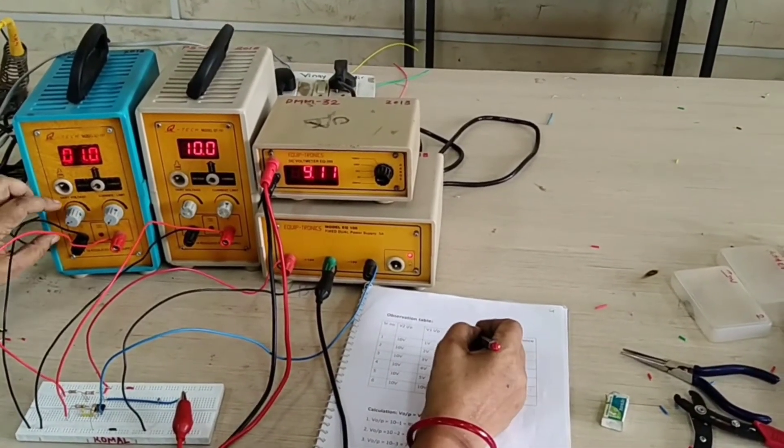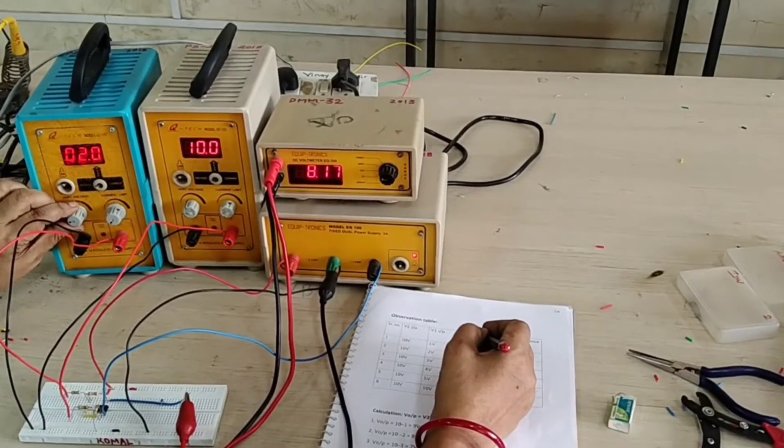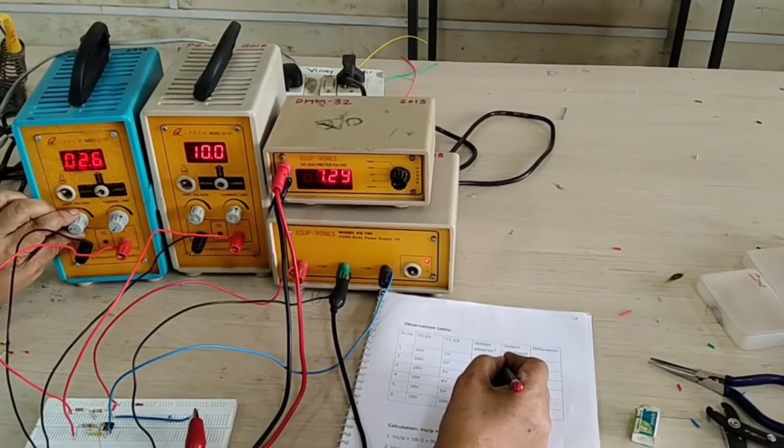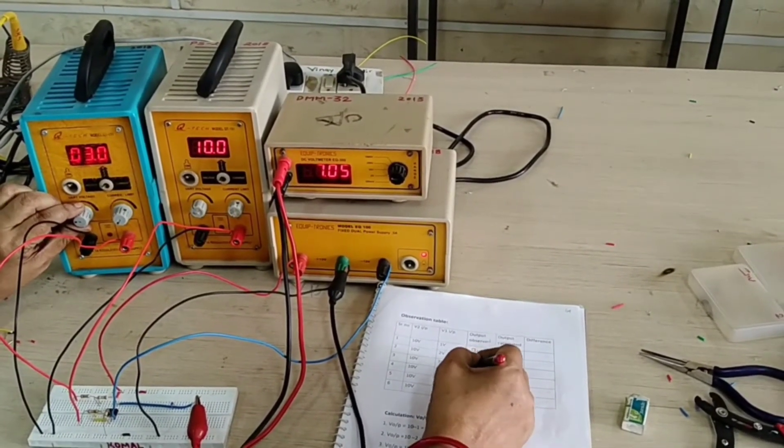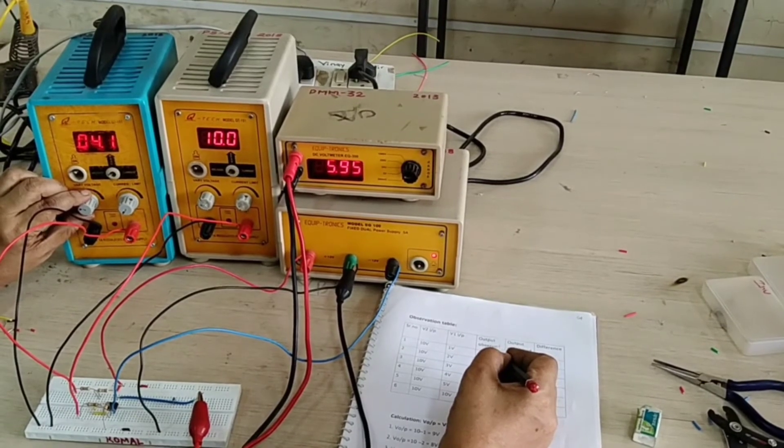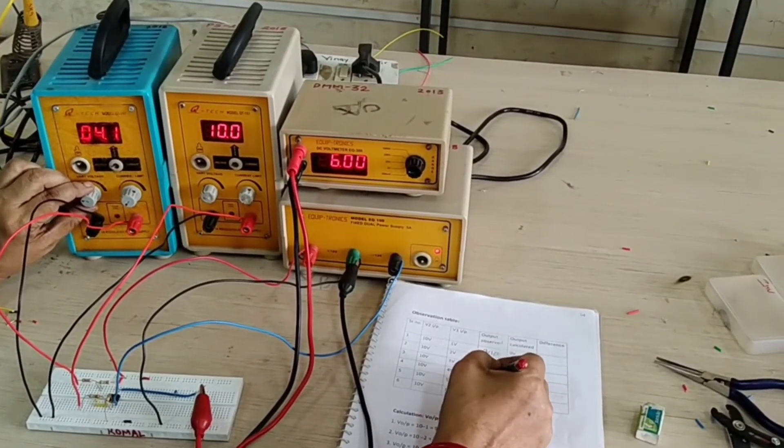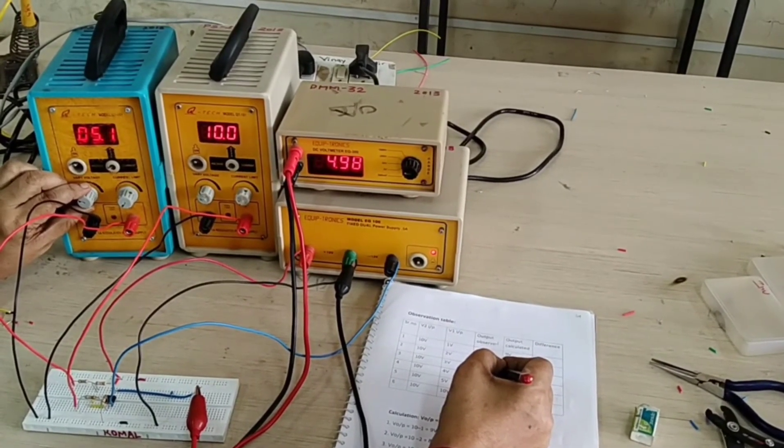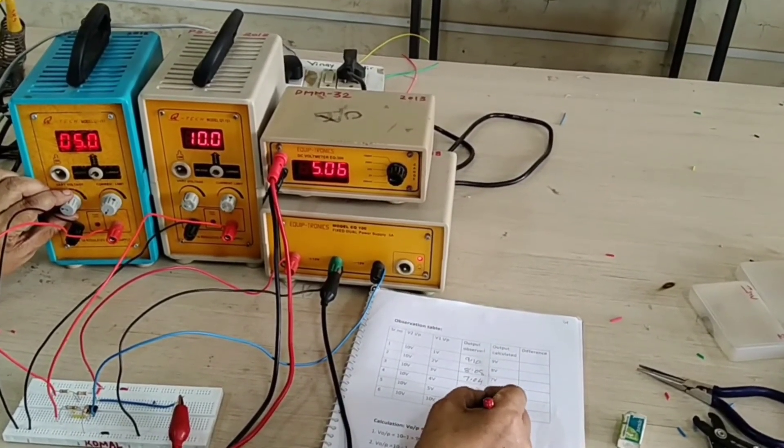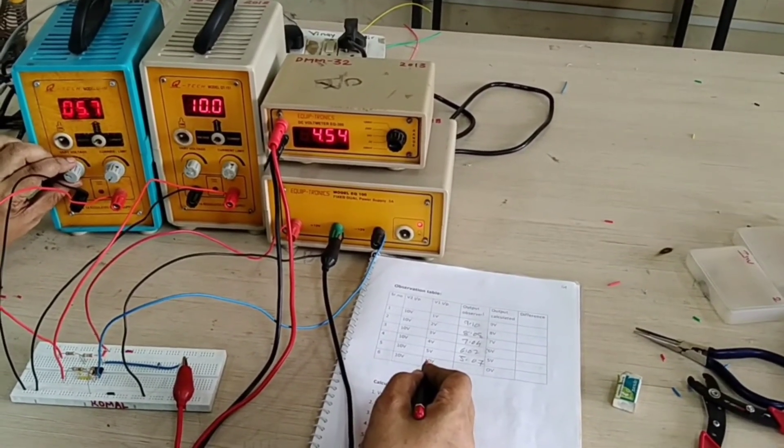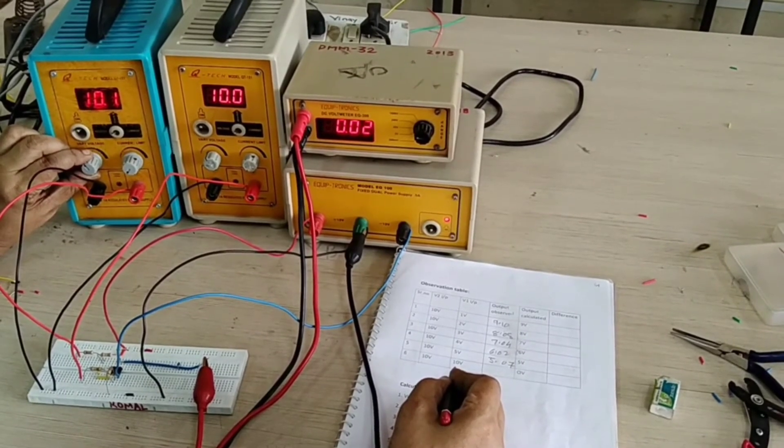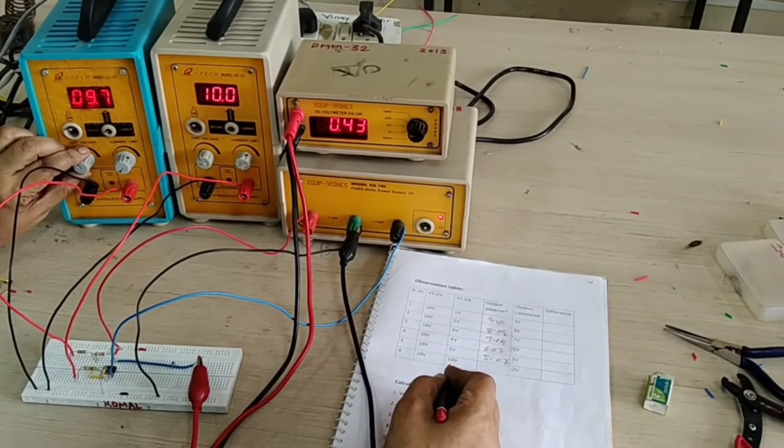And we like this, we are increasing this one V1: 2 volt, 10 minus 2 it may be coming 8.08, 8.08. 3, 7.04. 4, 10 minus 4 it's coming 6.02. 10 minus 5, 5.07, and the last reading 10 minus 10.